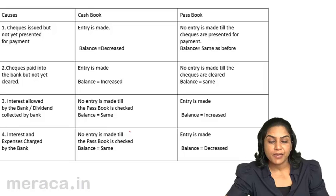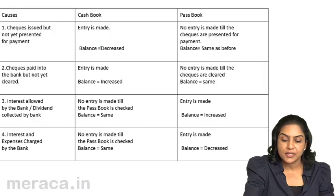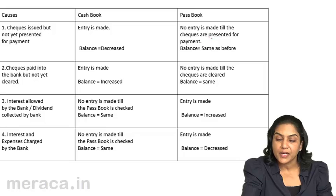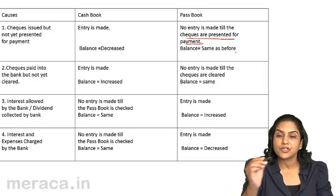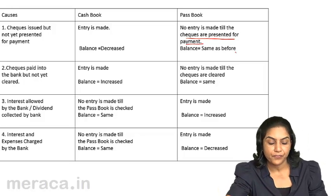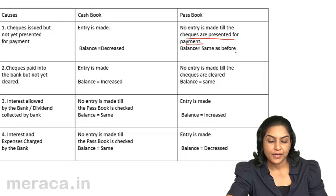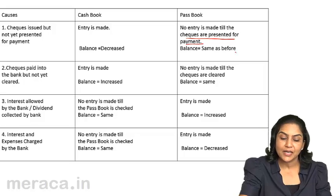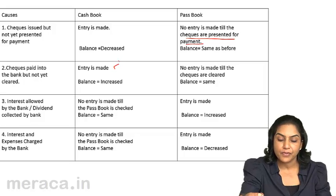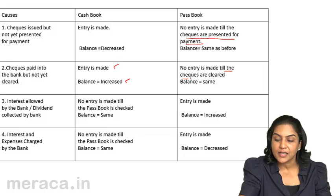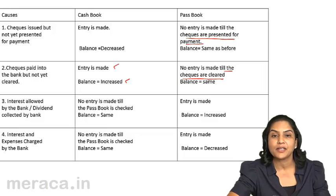To recap: when a cheque is issued, entry is made in the cashbook immediately and the balance decreases. But in the passbook, no entry is made till the cheque is presented for payment, so the passbook balance remains the same. When cheques are paid into the bank but not yet cleared, entry is immediately made in the cashbook and the balance increases, but no entry is made in the passbook until the cheques are cleared.